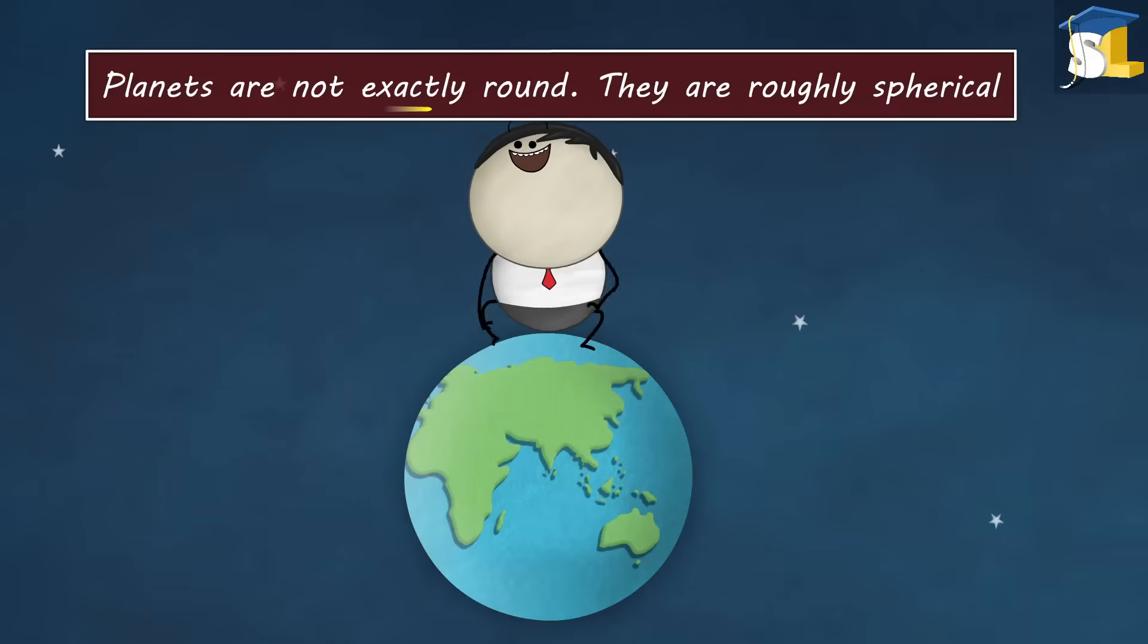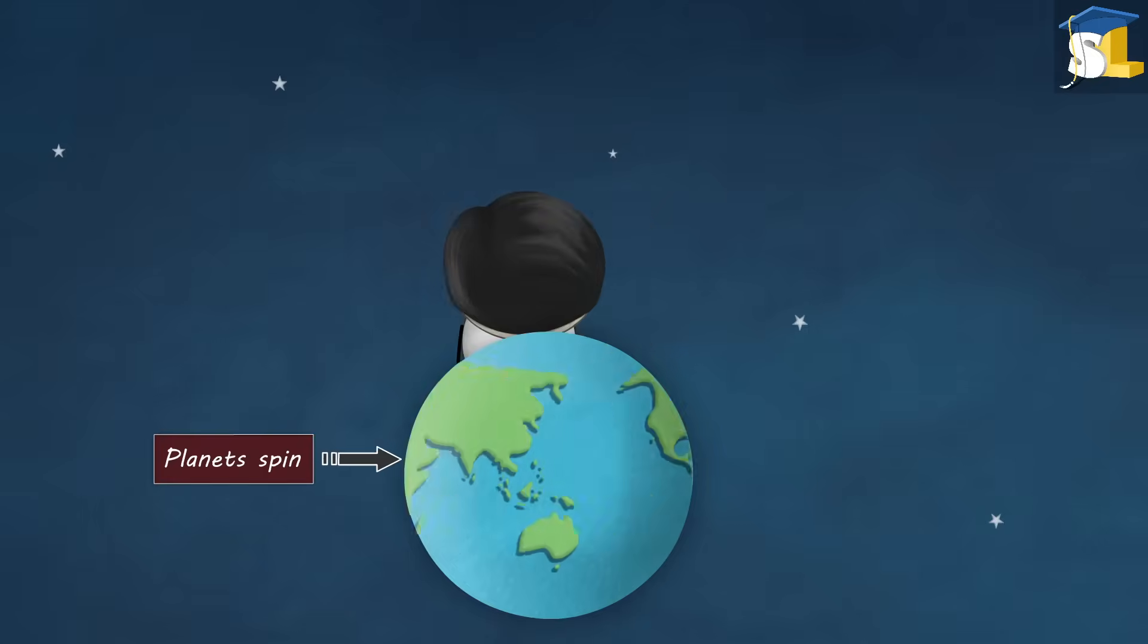However, planets are not exactly round. They are roughly spherical. This is because planets spin on their axis.